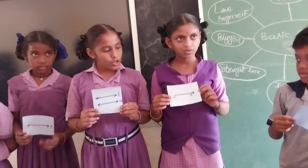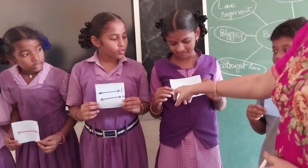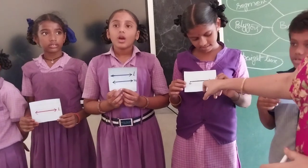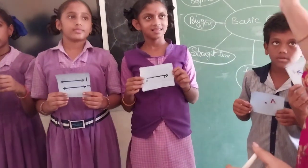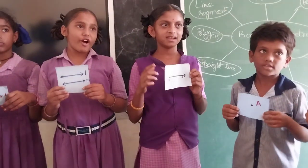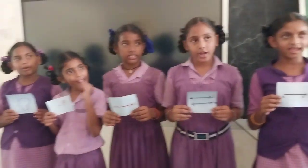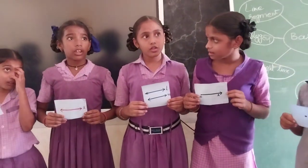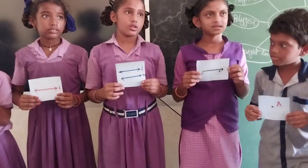How many endpoints does a ray have? A ray has one endpoint. From that endpoint we can extend in one direction to infinity. So, ray has one endpoint. A line segment has two endpoints. And a line has no endpoints.